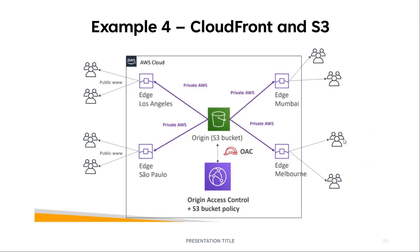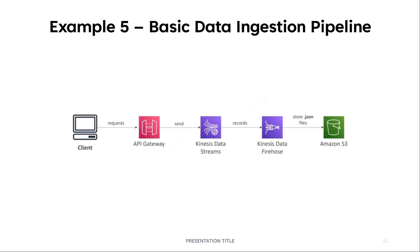Another example is CloudFront integrated with S3. S3 is a regional service, so if you're in Mumbai and your S3 bucket is in Los Angeles, you have to travel many hops, which increases latency. When you integrate CloudFront with S3, it caches the content at the edge location nearest to your region — if you're in India, the nearest edge location is in Mumbai — so the cached data is returned to you, reducing the latency of fetching data directly from the S3 bucket. This is a classic example of integrating two services together.